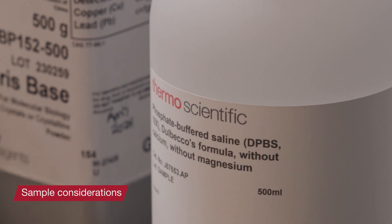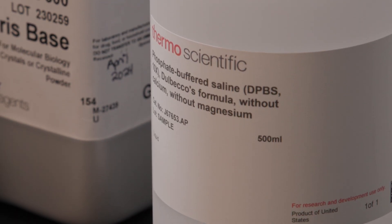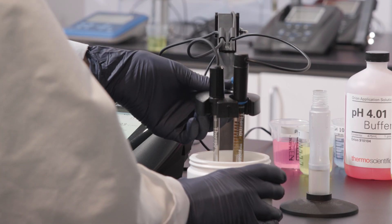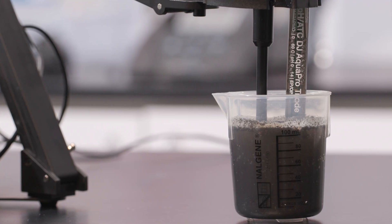Let's begin by discussing sample considerations. Different samples require different electrodes. When samples have certain chemical properties, lack water content, have high or low ionic strength, particulates, or are viscous, you need an electrode that can accommodate that sample type.